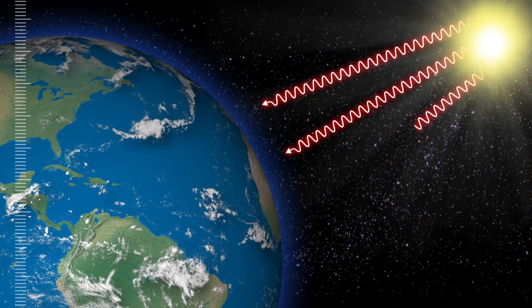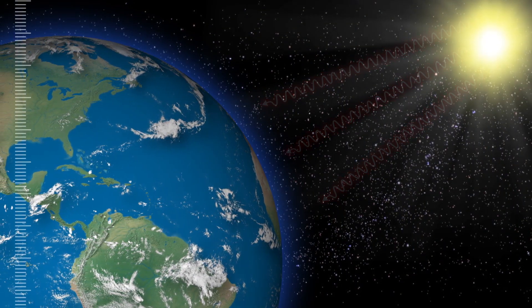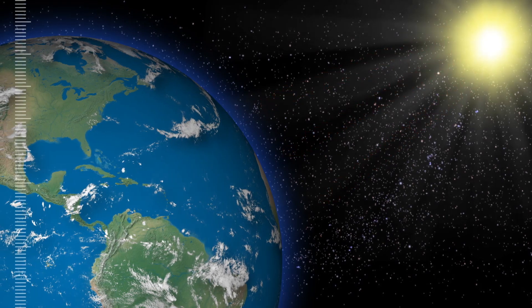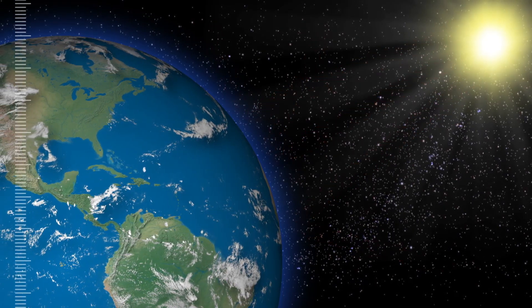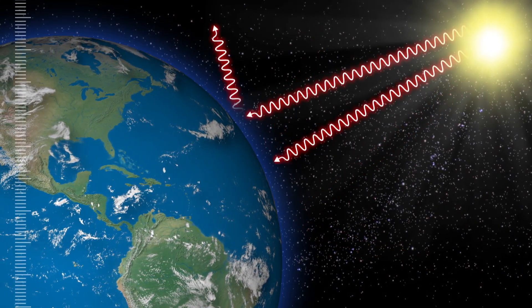The ozone layer protects everything on Earth from harmful solar radiation. Other things like cloud cover and the reflectivity of the Earth's surface also protect us from solar radiation.